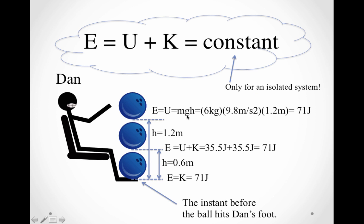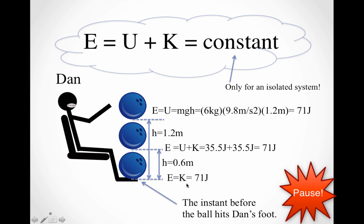The total energy at the top was all potential. We can calculate that if we know the mass of the bowling ball, the acceleration due to gravity, and the height — when we plug all those in, as previously done in another video, we get 71 joules of potential energy. As the ball falls, that potential energy starts turning into kinetic energy. Halfway down, half of 71 joules is potential and the other half has turned into kinetic — half and half halfway down. At the very bottom, the instant before it hits his foot, all of the energy has gone from potential into kinetic: 71 joules of kinetic energy at the bottom. But the total energy remained the same — always 71 joules.